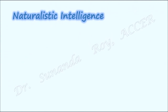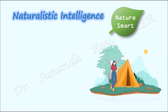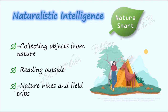Naturalistic intelligence, also known as nature smart, describes nature lovers. They feel very comfortable in nature and have a lot of knowledge about nature including surviving in nature. This type of people have a profound love for animals, outdoors, plants and almost any natural object. Naturalists, biologists, geologists and adventurers who make documentaries on wild animals exhibit naturalistic intelligence. Encouraging students to collect objects from nature, reading outside, taking them on nature hikes and field trips will help develop naturalistic intelligence.